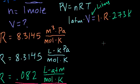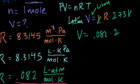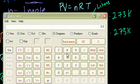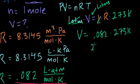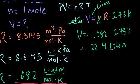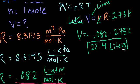We use R equals 0.082 liter·atmospheres per mole·Kelvin. So the volume equals 0.082 times 273 Kelvin, which equals 22.4 liters. So if I have any ideal gas at standard temperature — 0 degrees Celsius, or 273 degrees Kelvin — and I have one mole of it at standard pressure of 1 atmosphere, that gas should take up exactly 22.4 liters.